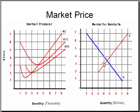What you now have is where supply equals demand, and this is equilibrium. You can tell at this market price that the firm is making an economic profit. This will attract new producers into the market, which will shift the supply curve to the right and lower the price.